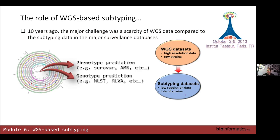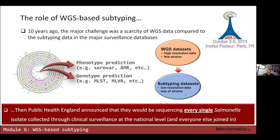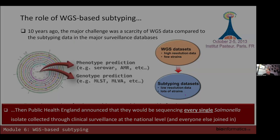A lot of the emphasis among peers at the time was on trying to develop methods that would essentially do in silico versions of the original typing methods, generally by looking for the same genetic determinants involved in the molecular subtype. That's when a representative from Public Health England announced to the world that they would be sequencing every single Salmonella isolate coming through their surveillance programs — unheard of at the time — and that pretty much set the stage for everything that's come since, forcing everybody else to up their game.